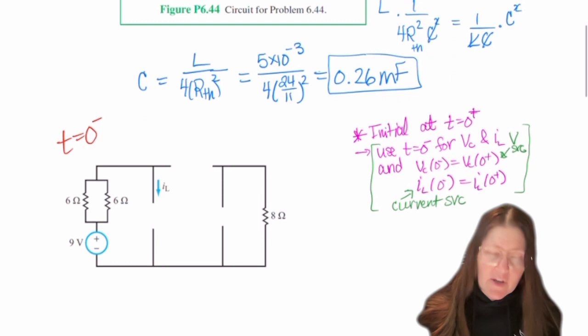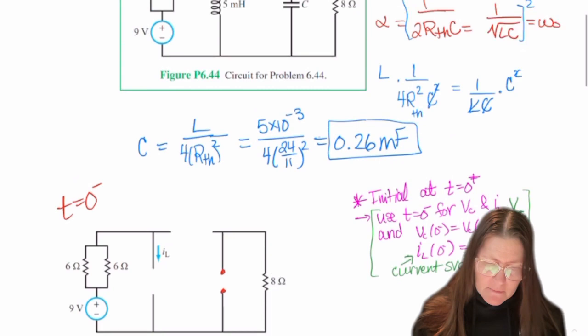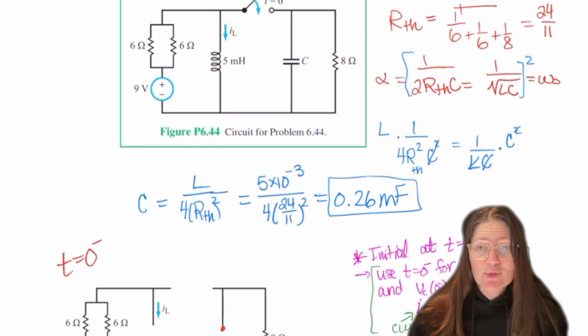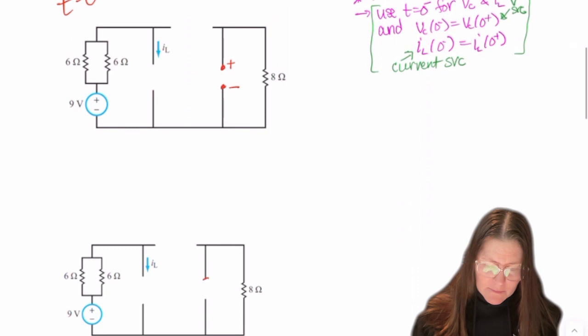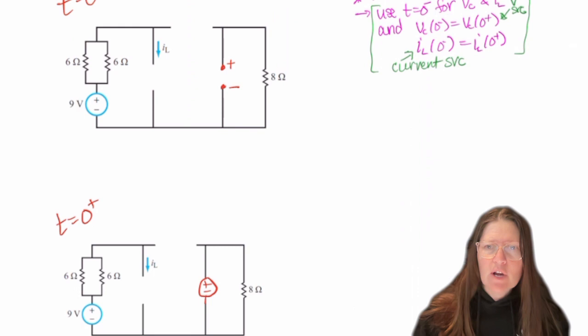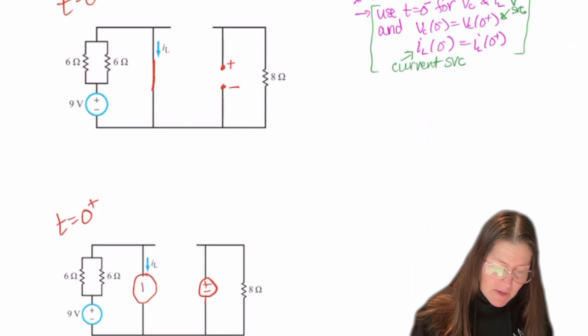So for t equals zero minus, I'm finding IL and VC and it will have sat there for a long time. VC was not labeled polarity wise this time. So I can choose an arbitrary direction. I just need to keep it consistent in my zero plus. I need to have the same direction. Same thing with IL, or IL was labeled. So IL needs to stay the same direction. So it will be there.